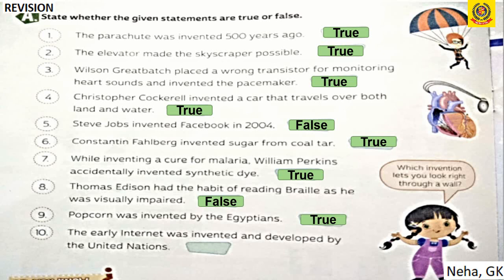Riddle: Which invention lets you look right through a wall? The answer is a window. Did You Know: The film The Imitation Game is based on the biography of computer scientist and mathematician Alan Turing, who is considered the father of theoretical computer science and artificial intelligence.